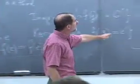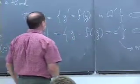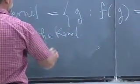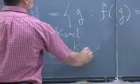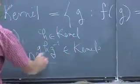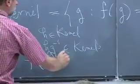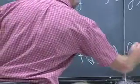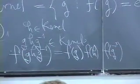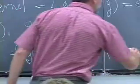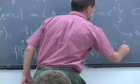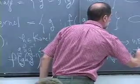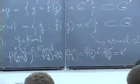Let's check that the kernel is a normal subgroup. Let's say h is in the kernel. We have to check that ghg inverse is also in the kernel. So we apply f to it: f of ghg inverse. Using the homomorphism property that's f of g, f of h, f of g inverse. Now the fact that h is in the kernel means f of h is the identity element. So this becomes f of g times the identity element times f of g inverse — and f of g inverse is the inverse of f of g — which is just the identity element. So that's why the kernel is closed under conjugation.